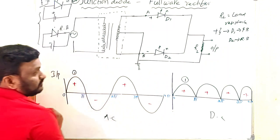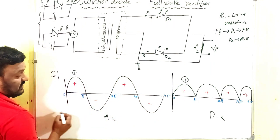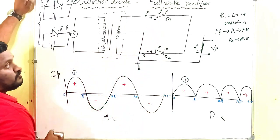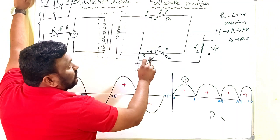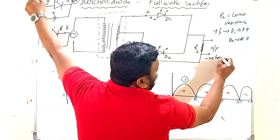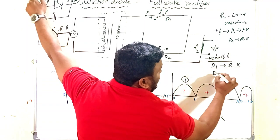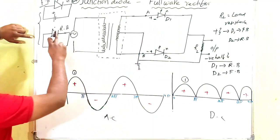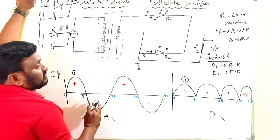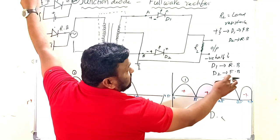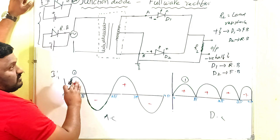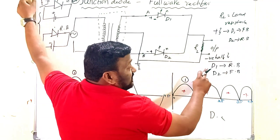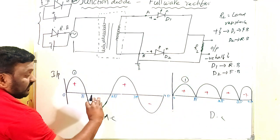After the positive half cycle, for the negative half cycle (from π to 2π), the polarity changes — A becomes minus and B becomes plus. For the negative half cycle, D1 is in reverse bias because p is connected to minus. D2 is in forward bias. So for the negative half cycle, D1 is in reverse bias and D2 is in forward bias, and we still get an output — the second positive-going cycle.